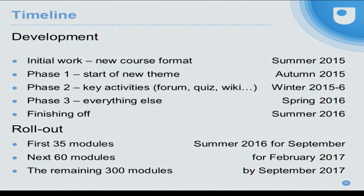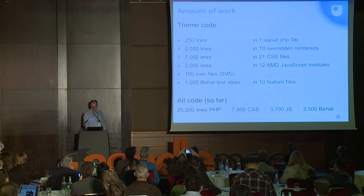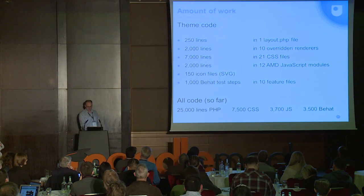We started the initial pilot work on the new course format last summer, and we've been working very busily. We're in the get-everything-finished phase at the moment — next year is dedicated to the rollout. We've written quite a lot of code: 7,000 lines of CSS in just the theme, and across all the code for this project, about 25,000 lines of PHP. We've done an awful lot of automated testing. As Sharon and Tammy said, it's an iterative process — this is just version one. Once released to students, I'm sure they'll have many good ideas for what we should do in the future. Thank you.